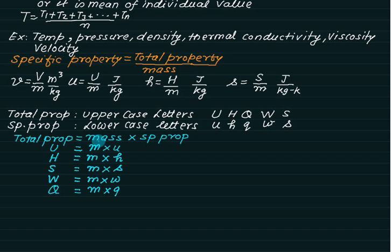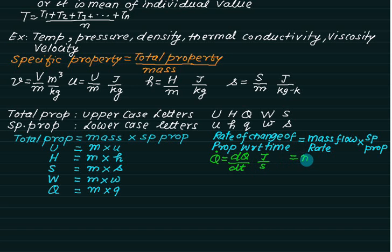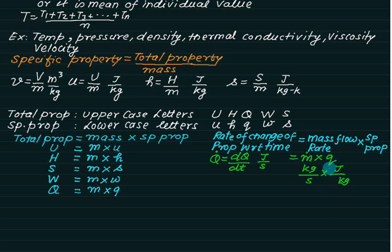If the total property is replaced by mass flow rate multiplied by the specific property, it gives the rate of change of property. So if you want to find the rate of change of a property with respect to time, it is given by mass flow rate multiplied by specific property. For example, Q-dot — the rate of change of heat with respect to time in J/s or Watts — equals mass flow rate (kg/s) multiplied by specific property q (J/kg). The kg units cancel, leaving J/s.